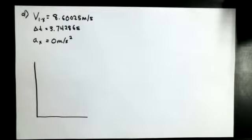So with our givens, we have that V1x equals 8.60025 meters per second, and we figured that out at the beginning with SOHCAHTOA. And then we have that T equals 3.74286 seconds.